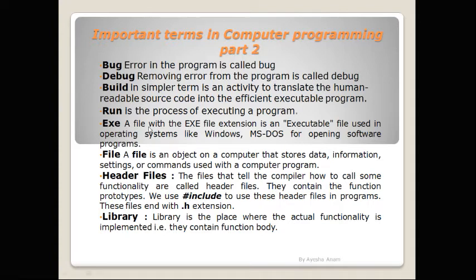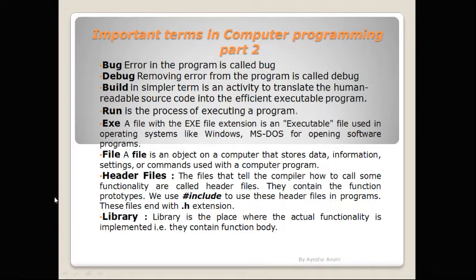Exe also contains graphics, the program's icon, and other resources that are needed by the program. Basically, exe is your software. The next term is File. A file is an object on a computer that stores data, information, settings, or commands used with a computer program. A file is the space held in memory, used for storing data, information, settings, or commands.